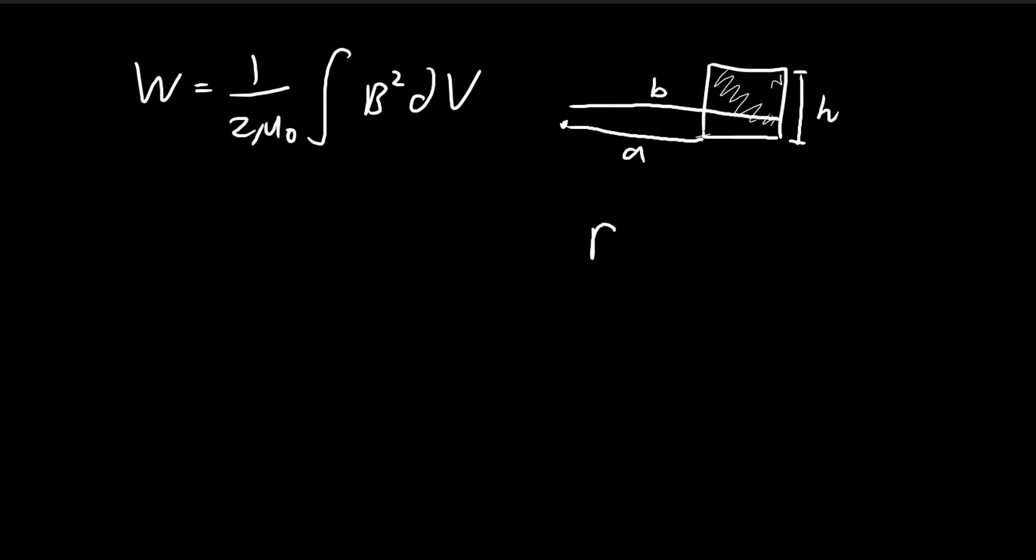The magnetic field, if you use Ampere's law, you'll find that it's equal to μ₀NI divided by 2πs, where s is the distance from the center all the way to the point that you're at.